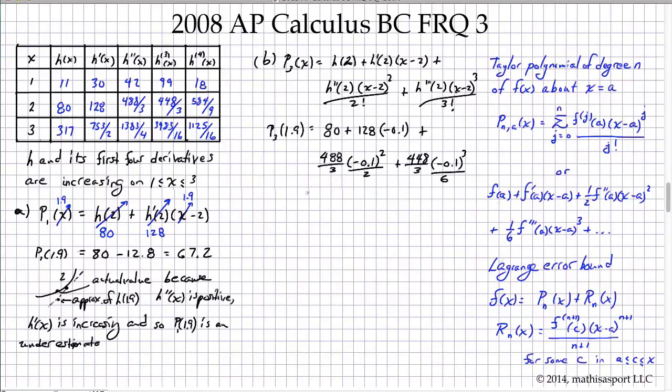Putting that all together, you get approximately 67.988. I think a fourth digit is 2 but I wouldn't bet my life on it. And that's all that we have for Part B.